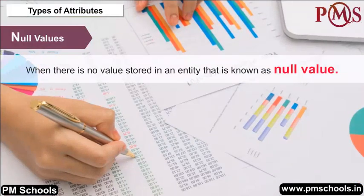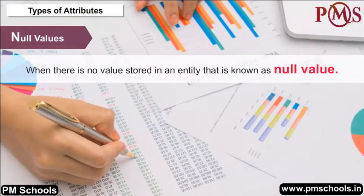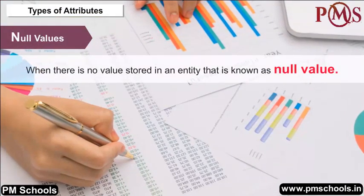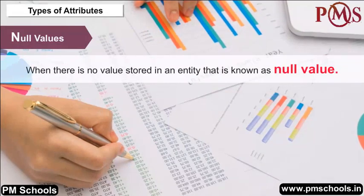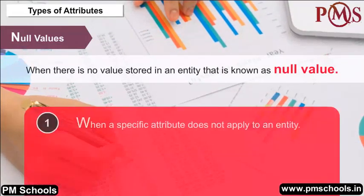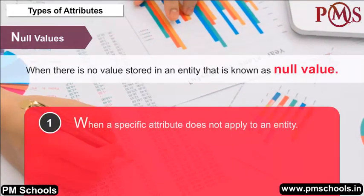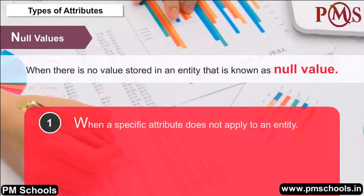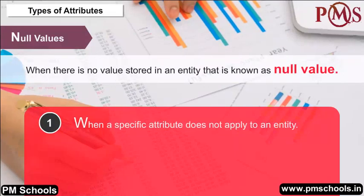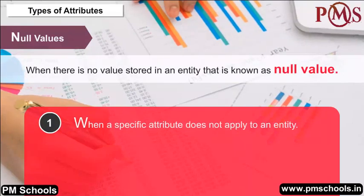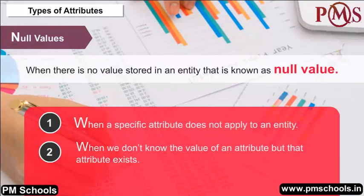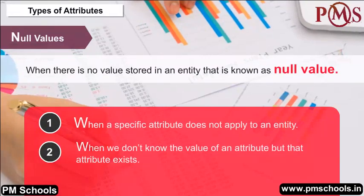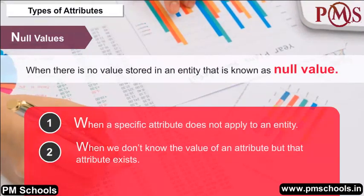Null Values: When there is no value stored in an entity, that is known as a null value. We use null values in three situations: first, when a specific attribute does not apply to an entity; second, when we don't know the value of an attribute but that attribute exists.